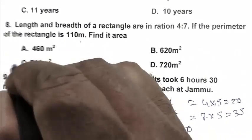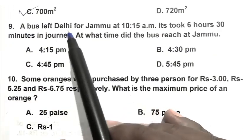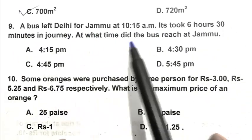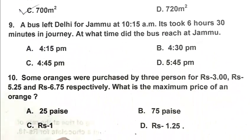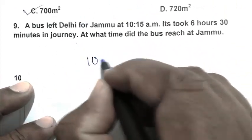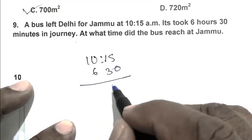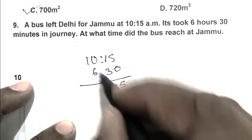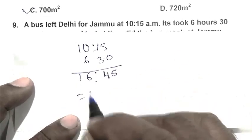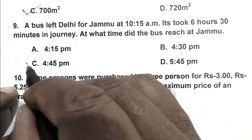Question number 9. A bus left Delhi for Jammu at 10:15 a.m. It took 6 hour 30 minutes in journey. At what time did the bus reach Jammu? So friend, bus started at 10:15 a.m. It takes 6 hour 30 minutes. So it's become 4:45 p.m. So friend C is the right answer.